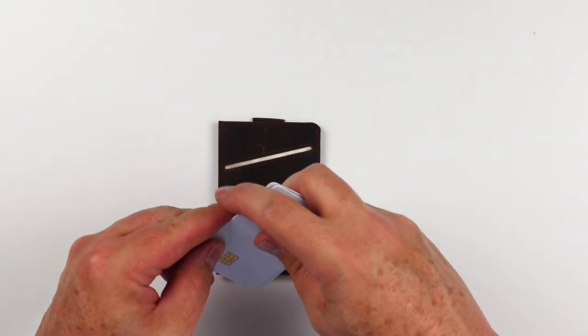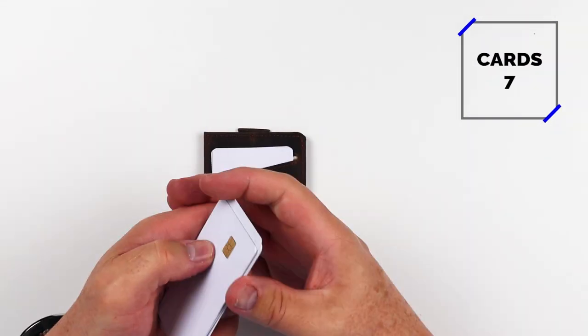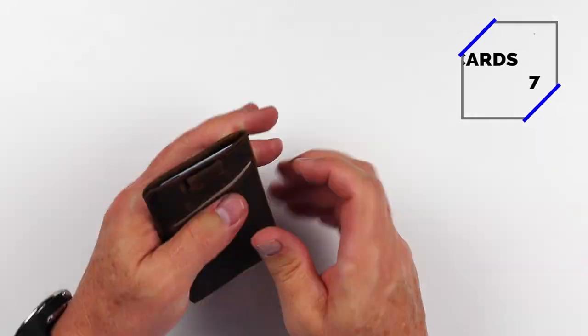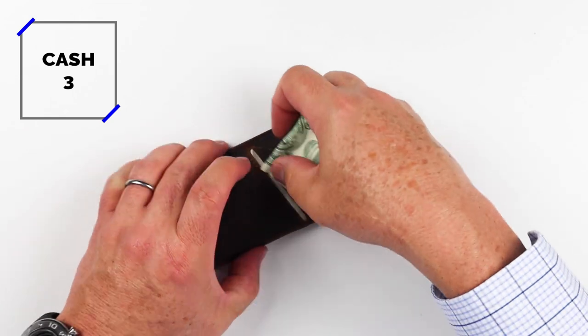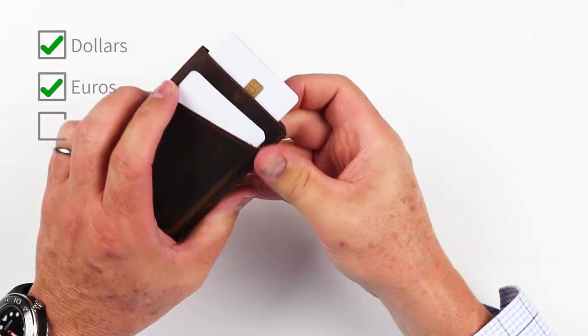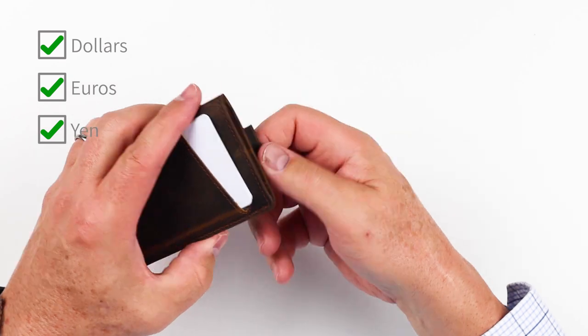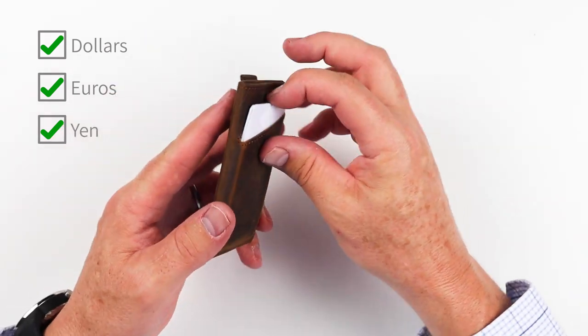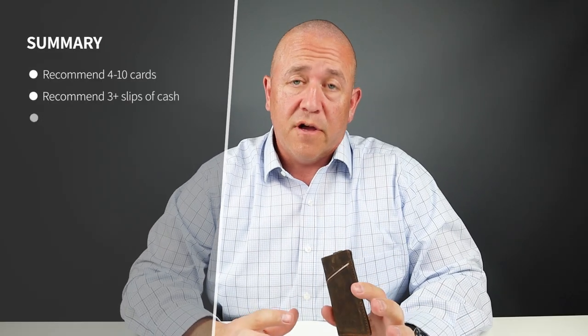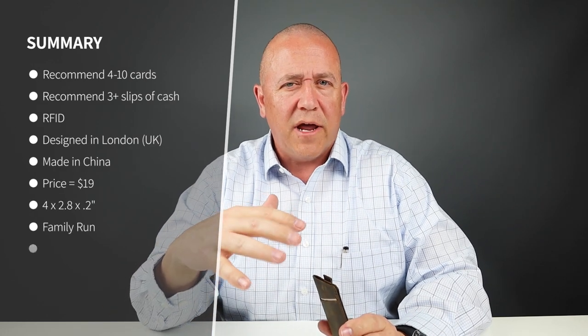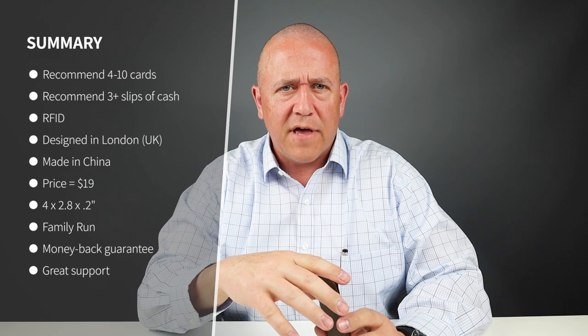Now onto the card and cash insertion test. As you saw, I got seven cards and three slips of cash in here. The company says you can have up to 10 cards plus cash. It's not likely this will break in due to RFID lining, so kind of be aware of that.